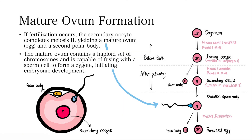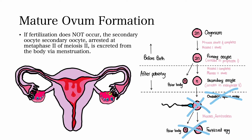If fertilization occurs, the secondary oocyte completes meiosis II, yielding a mature ovum and a second polar body. The mature ovum contains a haploid set of chromosomes and is capable of fusing with a sperm cell to form a zygote. If fertilization does not occur, the secondary oocyte arrested at metaphase II of meiosis II is discarded from the body via the process of menstruation.